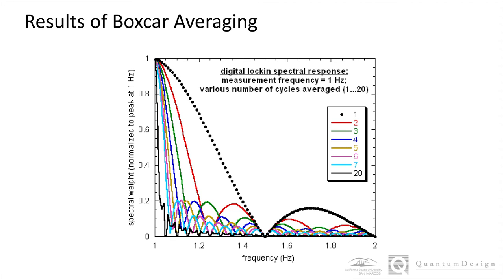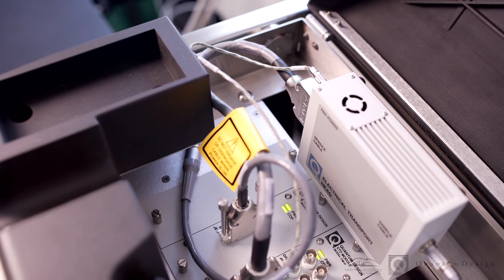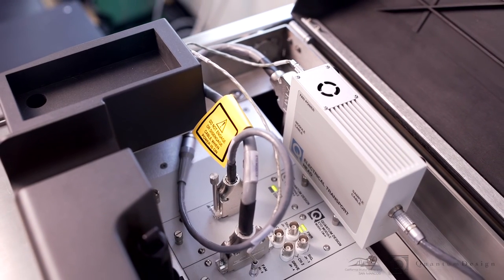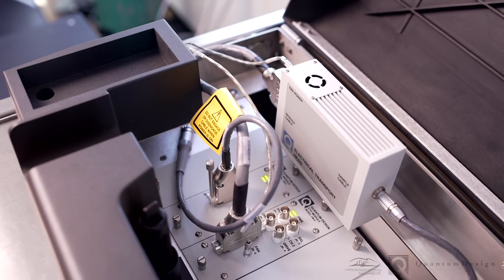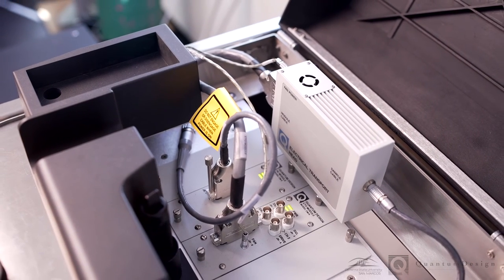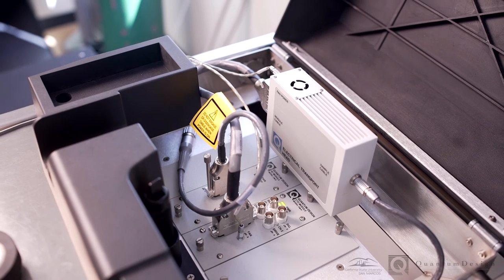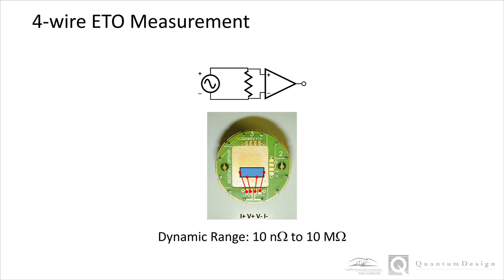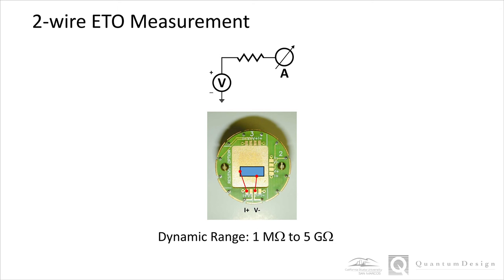The ETO possesses two measurement channels with their own dedicated electronics, meaning that two sets of precision current sources and voltmeters are individually running at all times. The current source's maximum output is 100 milliamps with 1 nanoamp minimum precision. And the output modes include DC or AC, with a frequency range between 0.1 Hz to 200 Hz. The ETO can operate in a low-impedance 4-wire measurement mode or a high-impedance 2-wire measurement mode. In the 4-wire mode, the acceptable impedance range is between 10 nano-ohm and 10 mega-ohm. Two-wire measurements can be performed from 1 mega-ohm up to 5 giga-ohms.